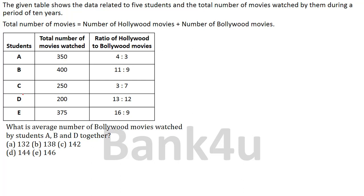Here is the first set of questions. It's a tabular DI. We need to spend 5-10 seconds to read the directions. The given table shows the data related to 5 students: student A, student B, student C, student D and student E. The table shows the number of movies watched by these 5 students during a period of 10 years.